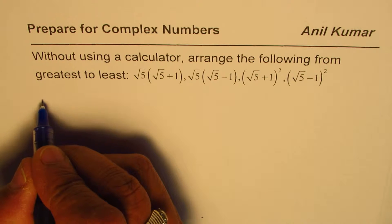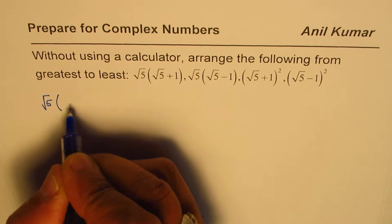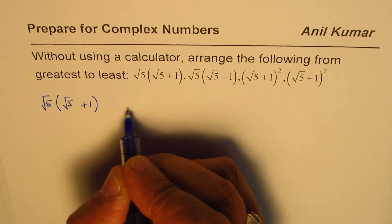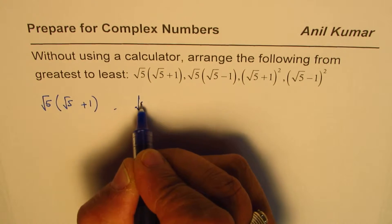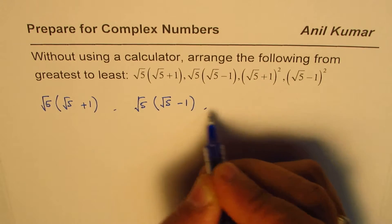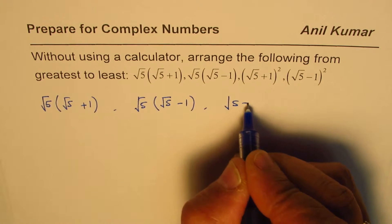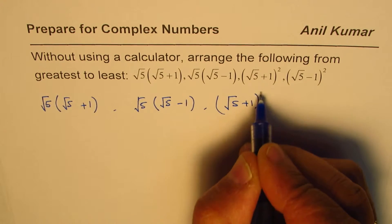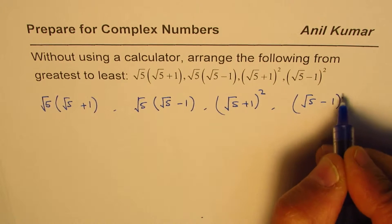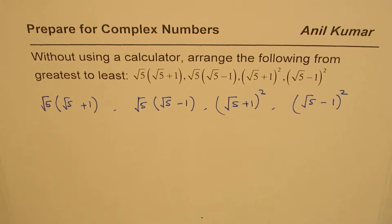The numbers we are working with are: √5×(√5+1), √5×(√5-1), (√5+1)², and (√5-1)². These are the four numbers to be arranged. We are not supposed to use a calculator.